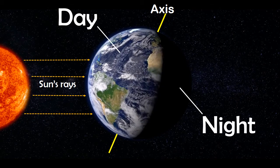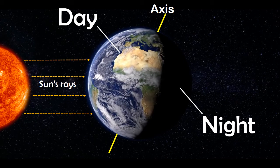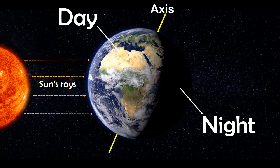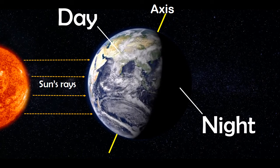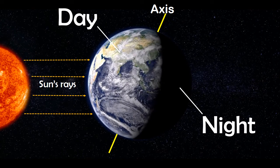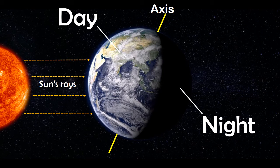After some time, the parts of the Earth experiencing daylight and night will switch. Rotation of the Earth causes night and day to alternate.